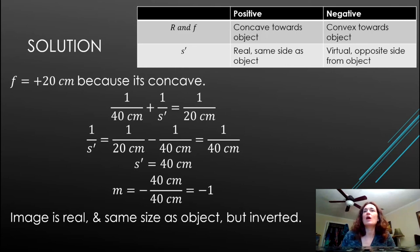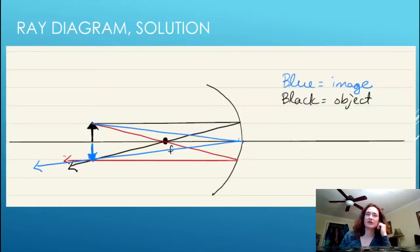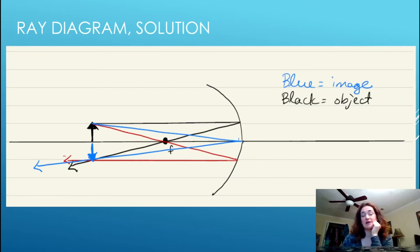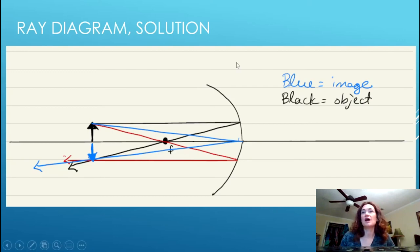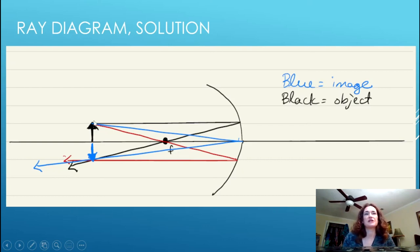Now let's look at the ray diagram. I redrew it with different colors for each ray so they're easier to differentiate. The object arrow is in black and the image arrow is in blue. The first ray — drawn in black — runs parallel to the optical axis and then reflects back through the focal point.